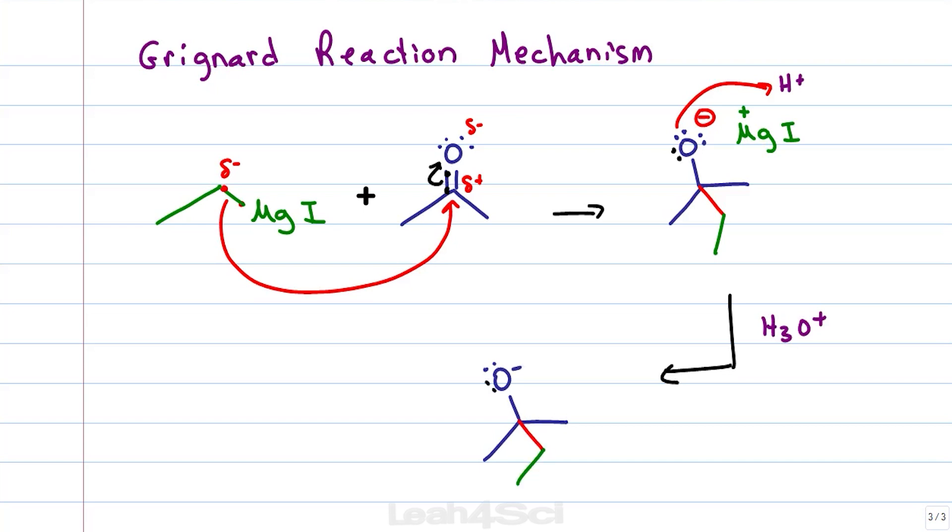This looks a little messy so if you want to redraw it, our longest carbon chain has four carbons, 1, 2, 3, 4 with an alcohol on carbon 2 and a methyl group also on carbon 2.